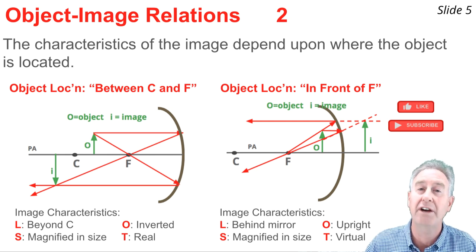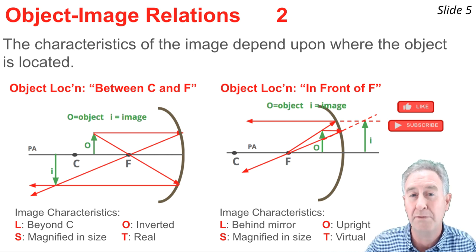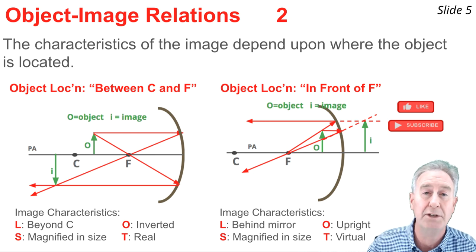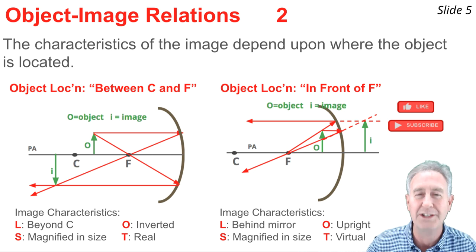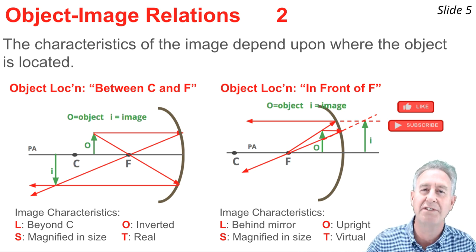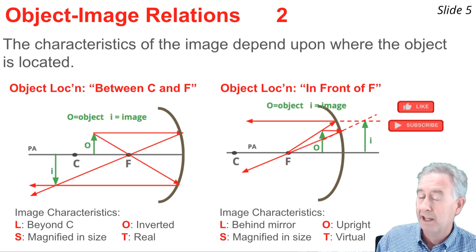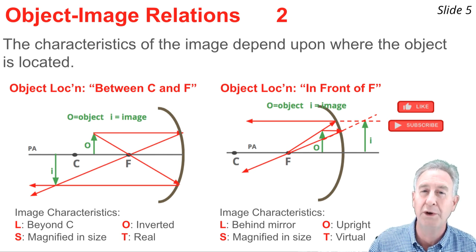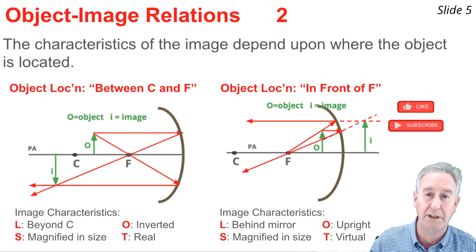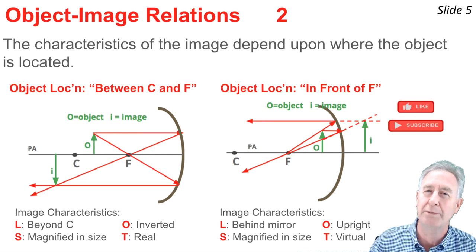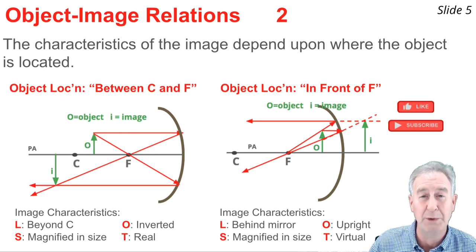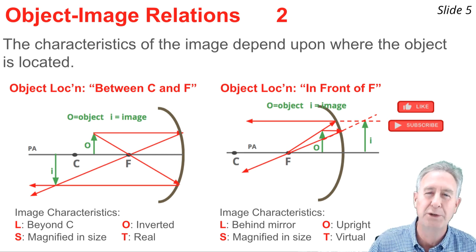In this situation, the object is placed between the focal point and the mirror. The image for the first time is on the opposite side of the mirror, and its orientation is upright. The size of this image is magnified and it has a type of virtual. The reflected rays are actually diverging away from each other — we had to trace them backwards on the opposite side of the mirror for them to come together. That's how you know it's a virtual image, and virtual images are always located behind the mirror.